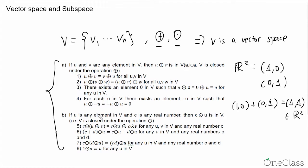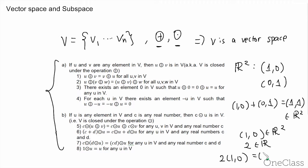Let's check condition b. If u is any element in v and c is any real number — say we have the vector (1, 0) in R² and the real number 2 — then 2 times (1, 0) gives (2, 0), which is also in R². This satisfies condition b, which says that if u is any element in v and c is any real number, then the scalar multiplication c times u is in v. This is also called closed under scalar multiplication.